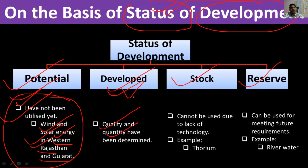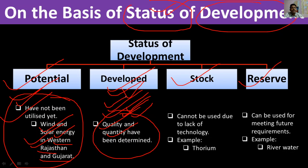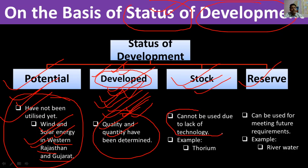Developed resources are those whose quantity and quality are known to us. Examples include coal, iron ore, and gold — we know how much is available in India and where it is, and its quality is also known. These resources where quality and quantity are well-surveyed are called developed resources.